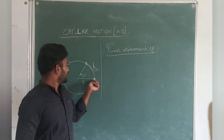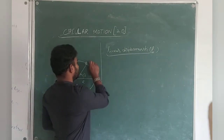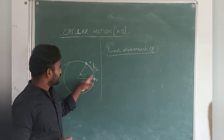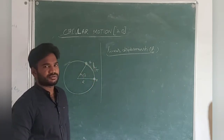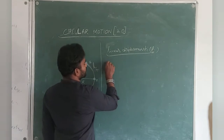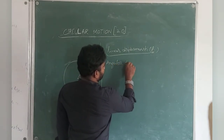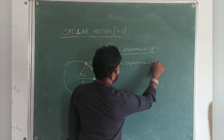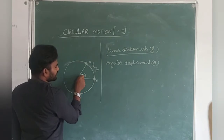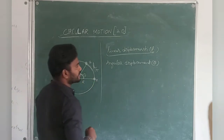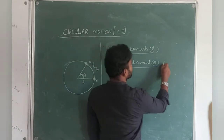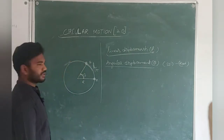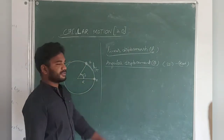Linear displacement is the displacement traveled from point A to point B. That distance is called linear displacement. Coming to angular displacement, denoted by theta — it is the angle between the initial position and the final position. The SI unit of angular displacement is radian.